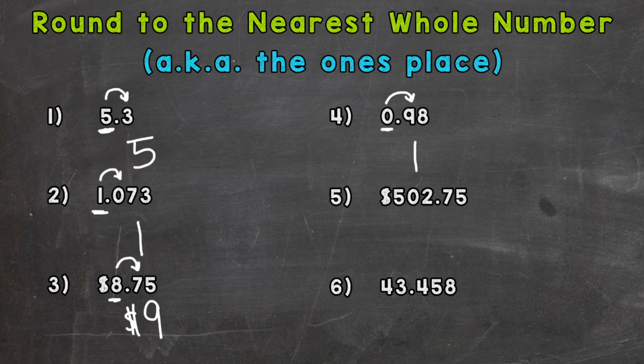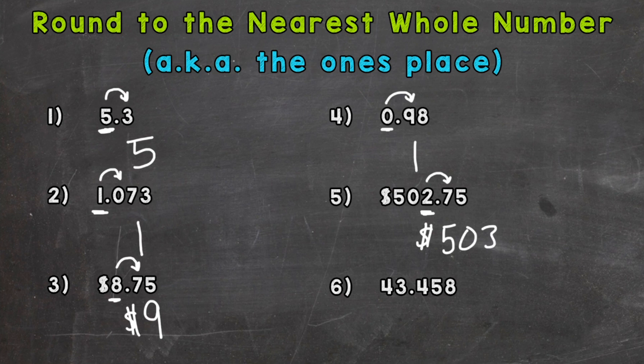Number five: round to the nearest dollar. We have five hundred two dollars and seventy-five cents. So we need to see if this amount of money is closer to five hundred two dollars or five hundred three. Underline the ones place and take a look next door — it's a seven, five or more, so we round up. This dollar amount is closer to five hundred three dollars; it rounds up to five hundred three.